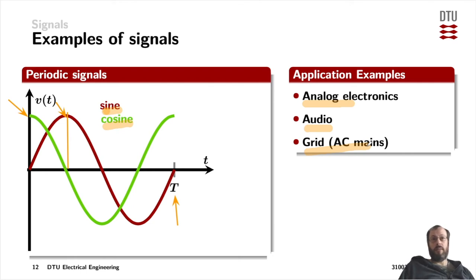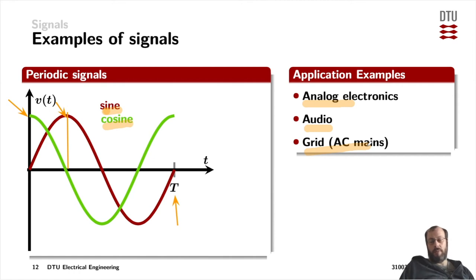Sinusoidal signals being the basis of analog electronics doesn't mean digital electronics can't also be described through sinusoidal waveforms — because sinusoidal waveforms are the basis for all other periodic waveforms. Basically, the more power involved or the higher the frequency, the more analog even digital signals become.